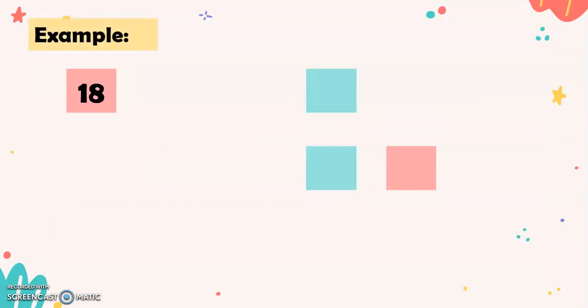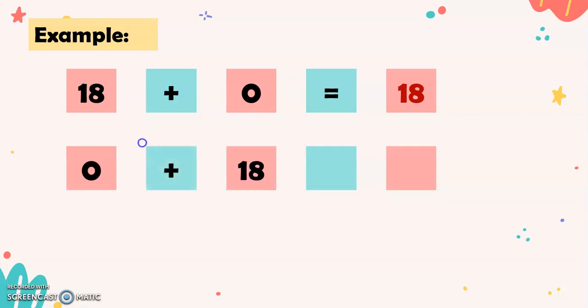Now, we have another example. 18 plus 0 equals 18. And 0 plus 18 equals 18. There you go.